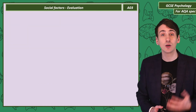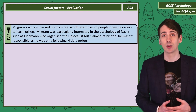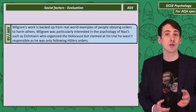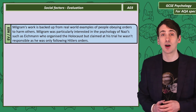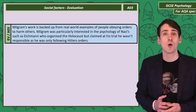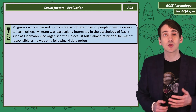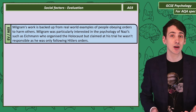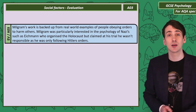When evaluating Milgram, we can consider real-world examples of people committing terrible acts while under orders. High-ranking Nazis like Eichmann — one of the main Nazis in charge of organising the Holocaust — were particularly interesting to Milgram. At his trial, Eichmann claimed that he didn't feel responsibility for his actions as he was only following Hitler's orders.